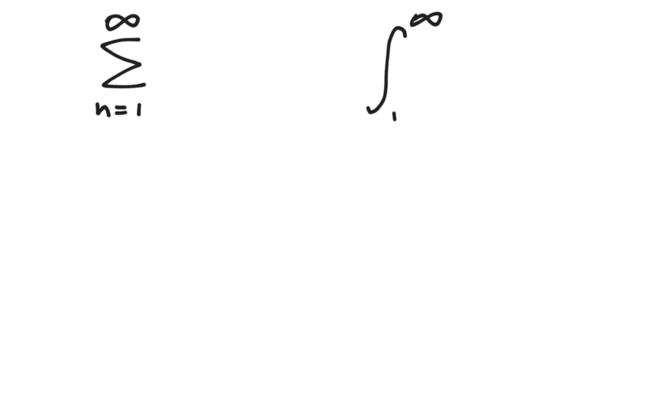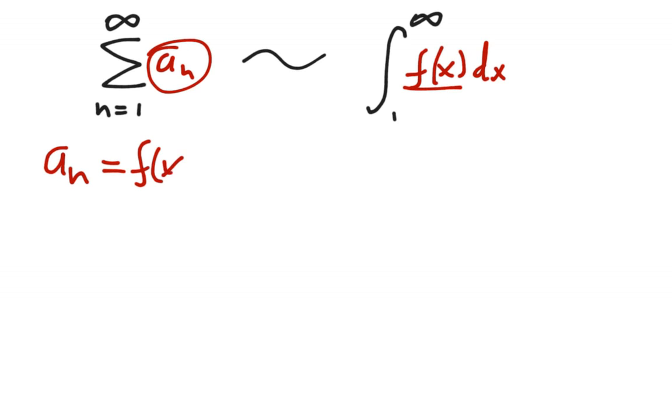The other idea is that this function here, the a sub n that we're adding up, is similar to this f of x dx, where it's the function that we're adding up. So when we do the integral test, these are going to be related, and the main key here is that we're going to pick f of x to basically be whatever we're adding up in our summation. So a sub n is going to equal f of x.